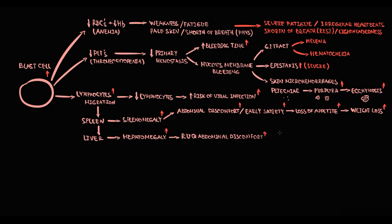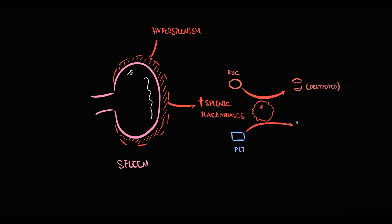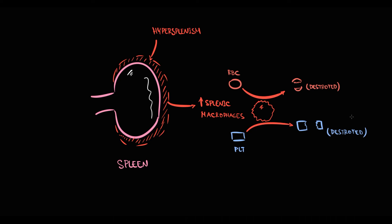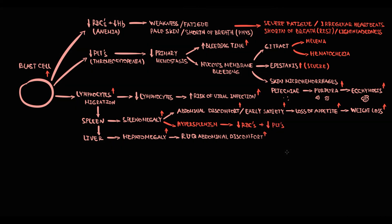At some point, the spleen becomes so large that hypersplenism develops. The concept is that the larger the spleen, the more reactive the splenic macrophages become. At some point, enlargement of the spleen overstimulates macrophages, and they begin to consume by phagocytosis normal red blood cells and platelets, resulting in their destruction. So hypersplenism causes destruction of red blood cells and platelets, aggravating the anemia and thrombocytopenia that are already present.